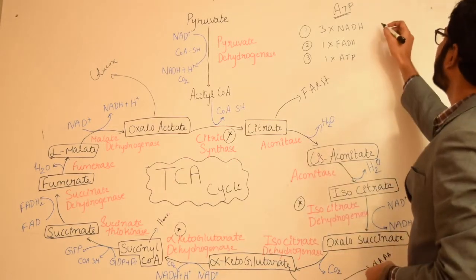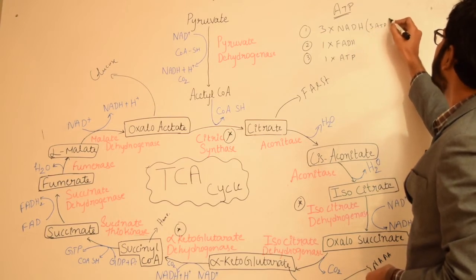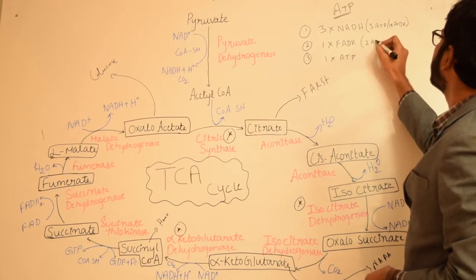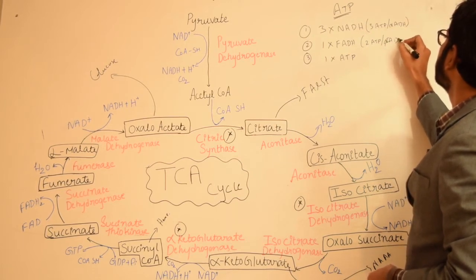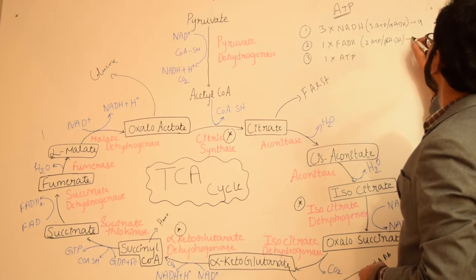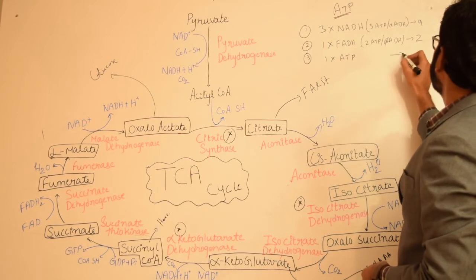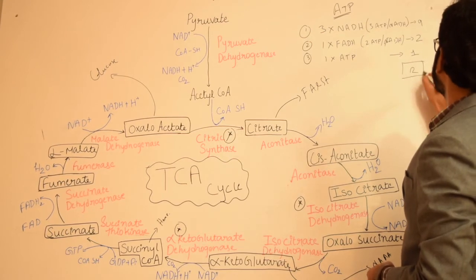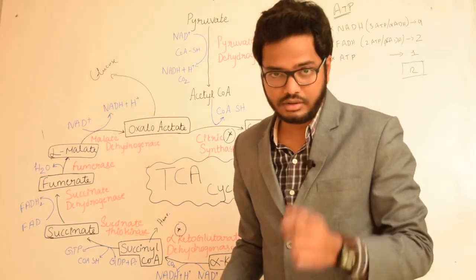Counting the ATP generated per one molecule of acetyl-CoA: each NADH contributes three ATP, so three NADH gives nine ATP. One FADH₂ contributes two ATP. Plus one ATP from substrate-level phosphorylation. Total: 9 + 2 + 1 = twelve ATP are generated per one molecule of acetyl-CoA.